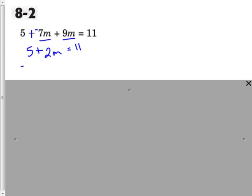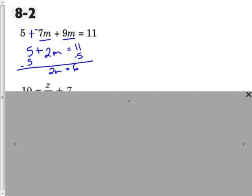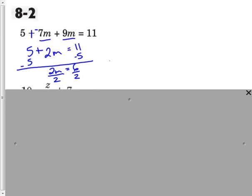Get rid of addition and subtraction, so subtract 5 on both sides. Draw your line, and we have 2m equals 6. Since this is multiplication, we'll need to divide by 2 on both sides. Because 2 divided by 2 is 1, that gets rid of our coefficient, so m equals 3. And that's our answer.